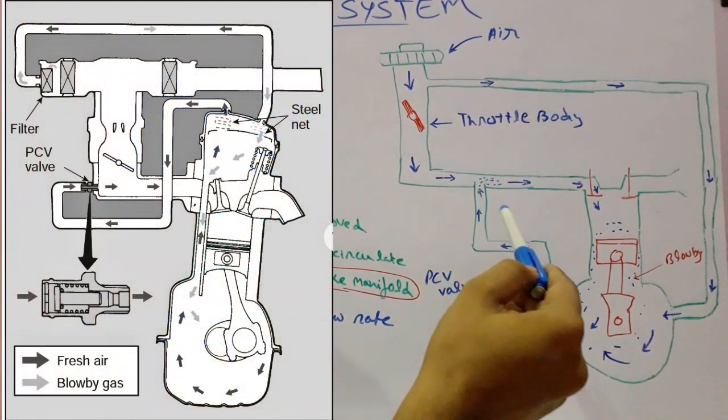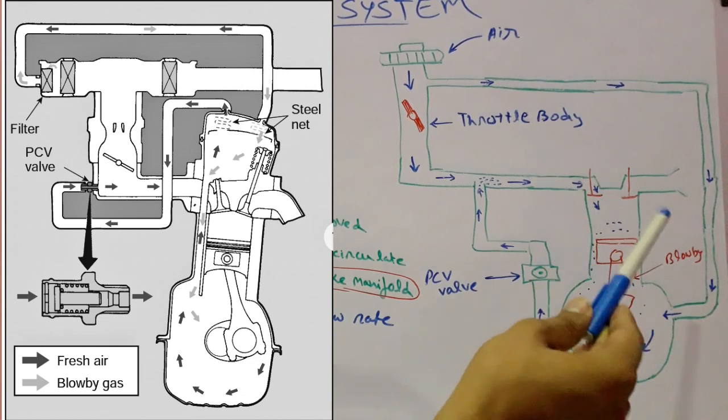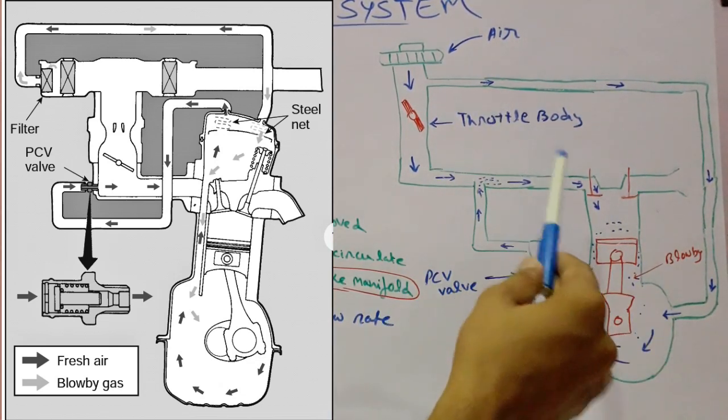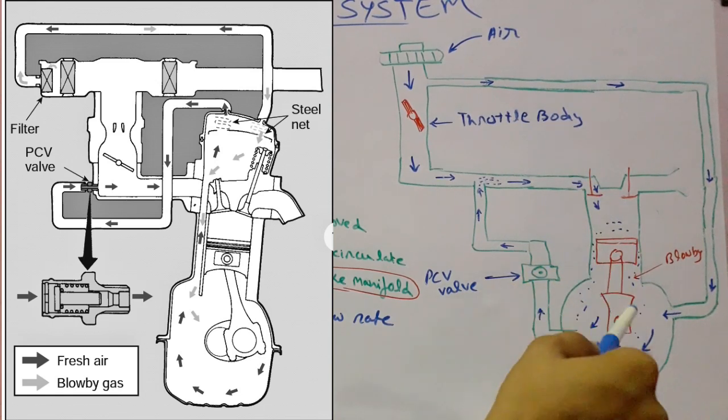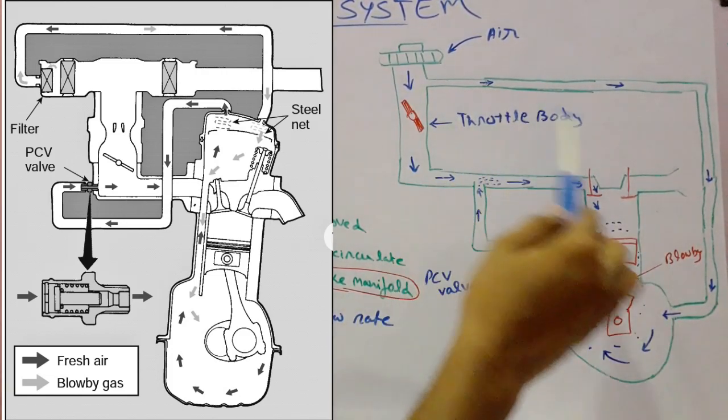The blow-by gases generally come through the passage made in the cylinder head. This is the simplest diagram that can be drawn to understand the PCV system. Here in this figure it is shown that this is directly connected to the crankcase.